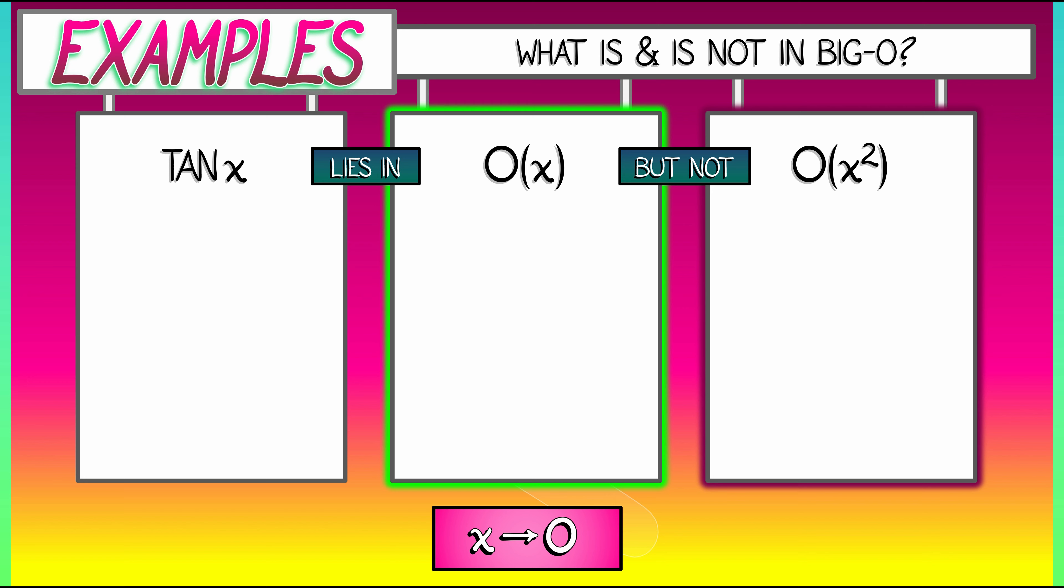Big O doesn't care about the constants. So if I look at negative 78x cubed, well, that's just a cubic monomial. So it's in big O of x cubed. But it's not in big O of x to the fourth or x to the anything bigger than 3, because we're in the limit as x goes to zero.